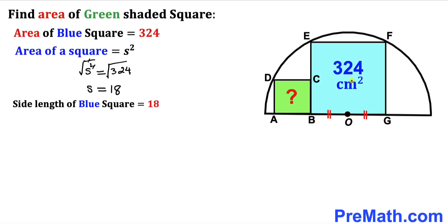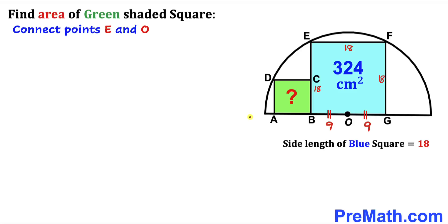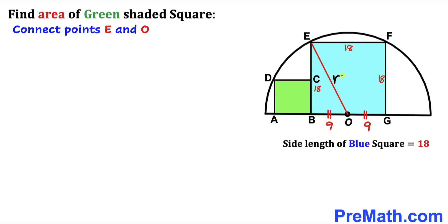The side length of this blue square is 18 centimeter on all four sides. Since these two side lengths are equal, we can divide 18 into two equal parts: each part is 9 centimeter. Now let's connect point E to center O — this segment OE is the radius of the semicircle, which we represent as r.